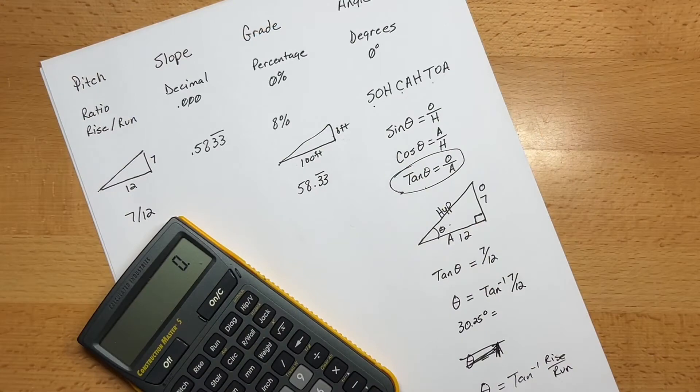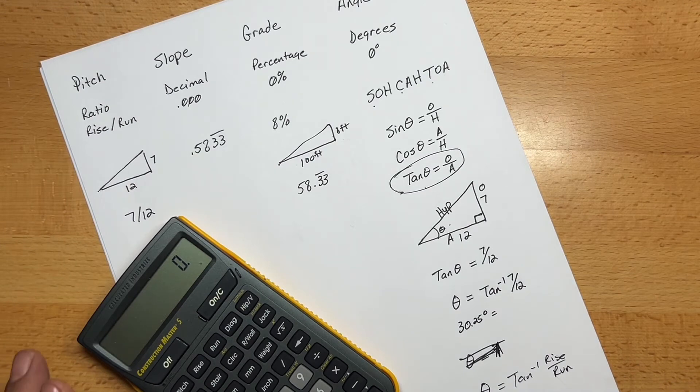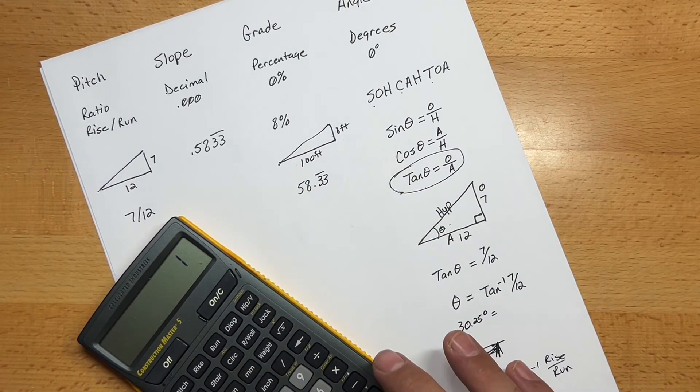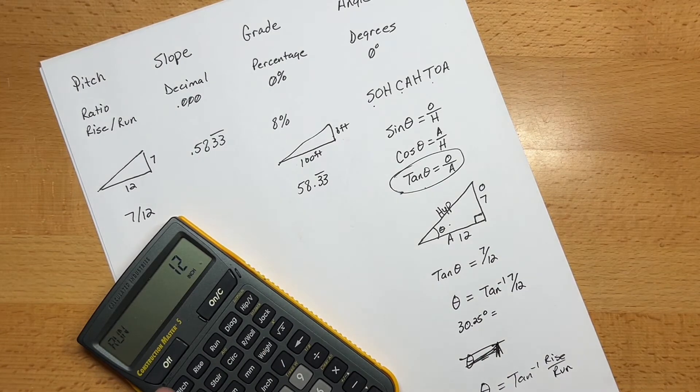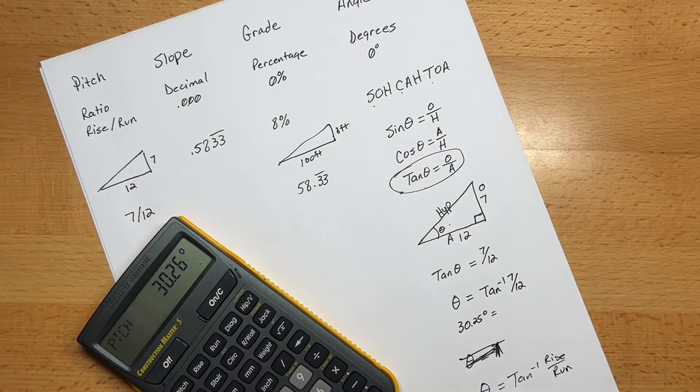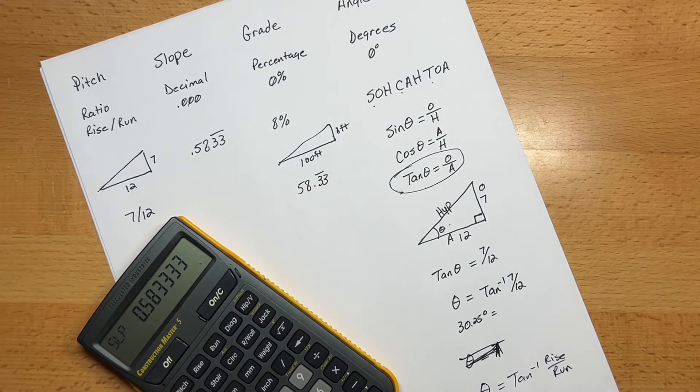Now let's do it with the other calculator. So now we're going to take those same values that we have for our example, our 7-12 pitch, and we're going to put them into the Construction Master 5. I'll show you how easy this is to do. So 7 inches of rise, 12 inches of run. Then all we have to do is hit the pitch button, and that's going to give us our degree, and it's going to round it up a little bit, but 30.26 degrees. If we hit pitch again, that's going to give us our grade, 58.3%. If we hit pitch again, it's going to give us our slope at 0.583 repeating. And if we hit pitch again, then it's going to go back to our 7, which is 7 over 12, that gives us our pitch.